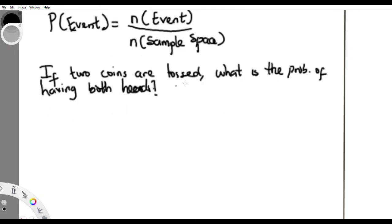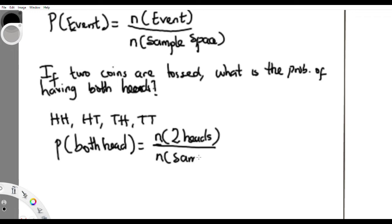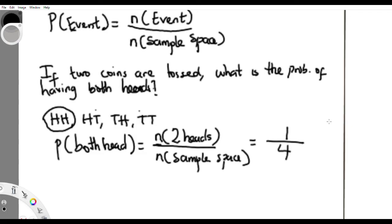Let's take an example: if two coins are tossed, what is the probability of having both heads? From what we know, tossing two coins gives: head-head, head-tail, tail-head, or tail-tail. The probability of both heads equals the number of times two heads can appear — which is once — over the sample space of four. So that's one over four.